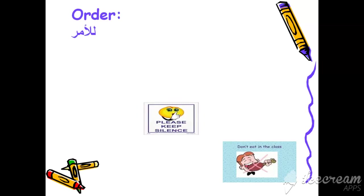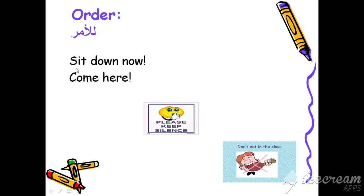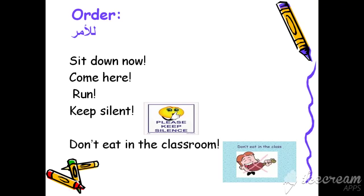We said that we use the imperative form to give orders, warnings, to give advice or requests. Let's start with orders — اللي هي الأوامر. Here we have some examples: 'Sit down now', 'Come here', 'Run', 'Keep silent' — يعني خليك ساكت. 'Don't eat in the classroom' — أنا بنهيك إنك توكل بالغرفة الصفية.